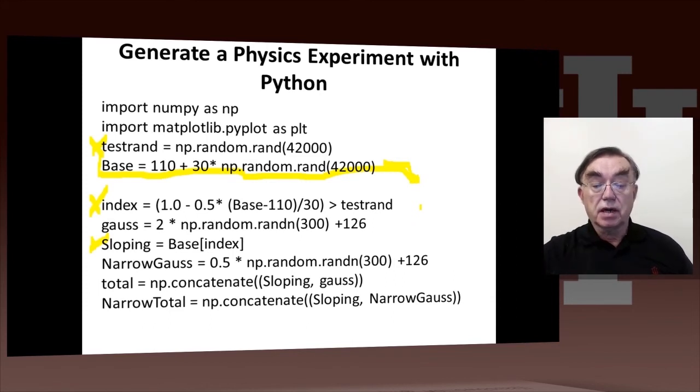And so sloping equals base of index actually gives you a set of random numbers, which are between 110 and 140, with a number at 140, half as likely as the number of 110. This so-called accept-reject technology we'll discuss a little later on, but for most of the rest of the session, we will not bother to discuss it.